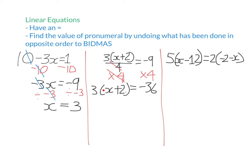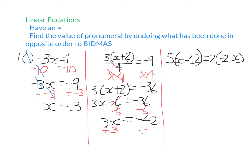It may help to expand the brackets: 3 times x and 3 times 2 gives 3x plus 6 equals negative 36. Adding 6 was the last operation, so subtract 6 from both sides — plus 6 and minus 6 cancel — leaving 3x equals negative 42. To undo timesing by 3, divide each side by 3. Times 3 and divide 3 cancel, giving x equals negative 42 divided by 3, which is negative 14.